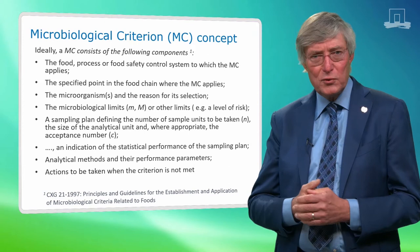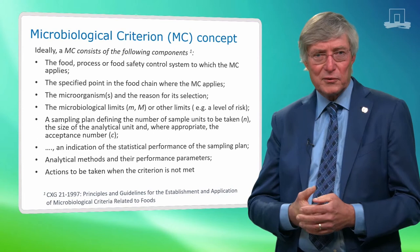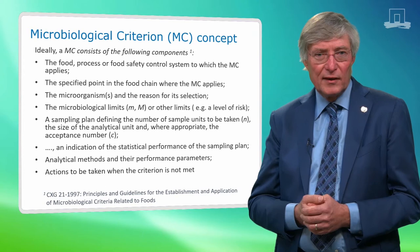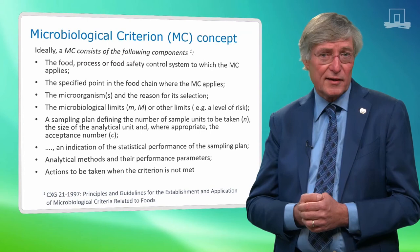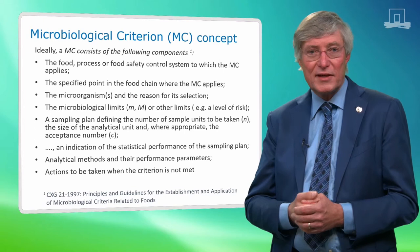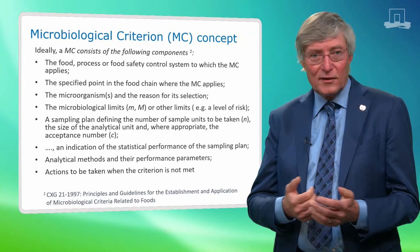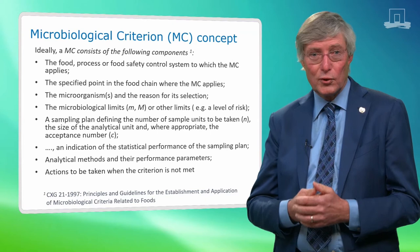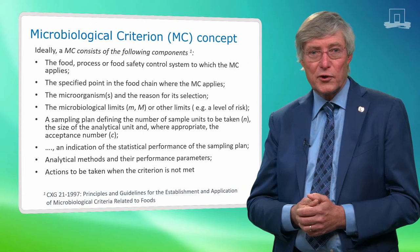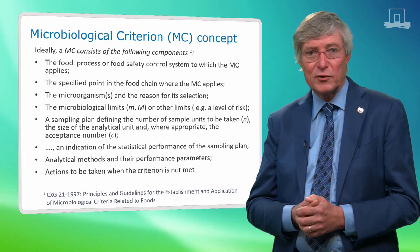A few words on microbiological criteria and how the sampling plan fits into the concept. The use of microbiological criteria to control microorganisms in a risk-based way was developed by ICMSF in the 1980s. Codex Alimentarius adopted and evolved the concept through several of its standards, codes, and guidelines — for instance, through Codex code CXG 2.1, issued first in 1997 and updated in 2013, which informs governments and industry on best practice for setting and using MCs. Note that there are many components included in the MC concept according to Codex: the food, process, or control system to which the MC applies; the point in the food chain where it applies; the microorganism and why it has been selected; the microbiological limits; and the sampling plan defining the number of sample units to be taken.